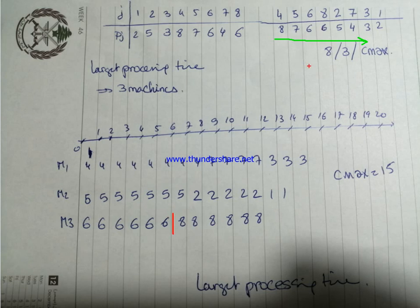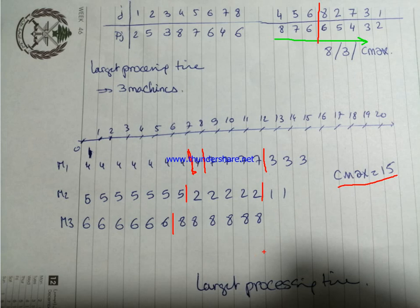We then do job eight, then finish that machine. We do job two and finish there — correction, job four finishes here. Then we do job seven and finish there. It's extremely difficult to use the mouse. The final makespan value is equal to 15.